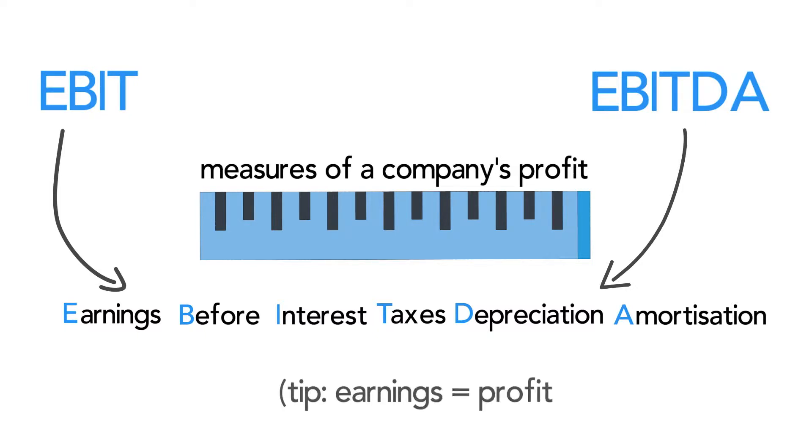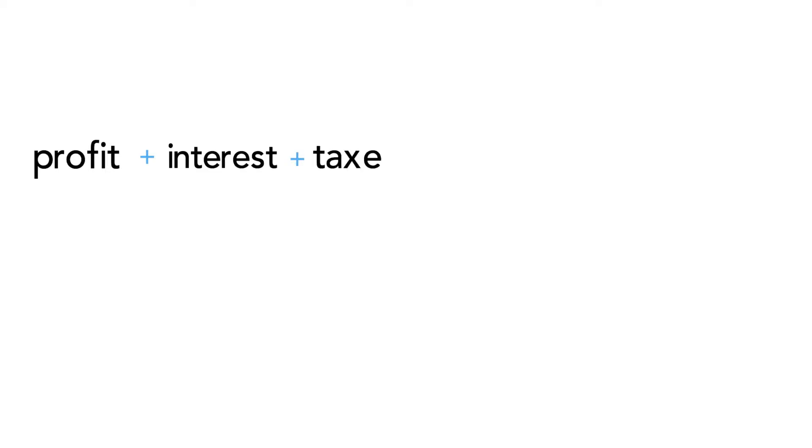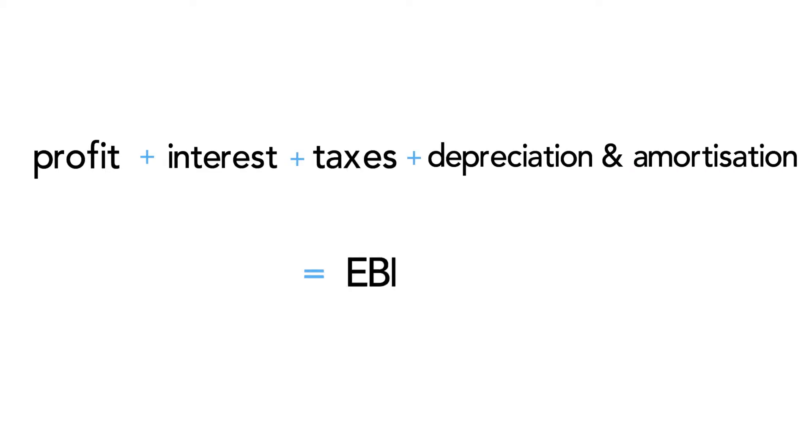Earnings is just another word for profit, meaning you start with profit and add the cost of interest, taxes and depreciation back.